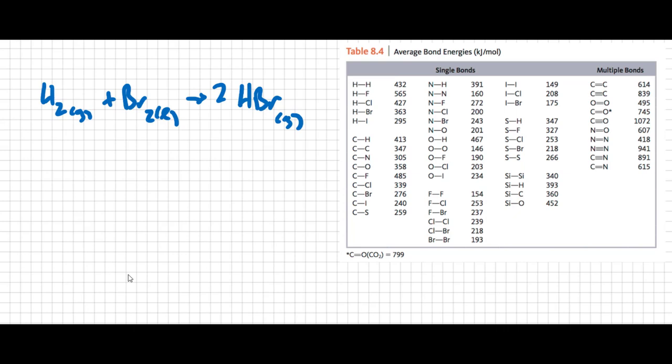Now to find the energy change, the first thing we have to do is break the bonds. So the bonds that we're going to break are the hydrogen-hydrogen bond and the bromine-bromine bond.